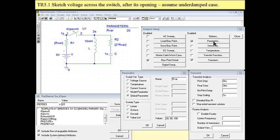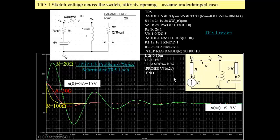We perform parametric analysis and we have a probe window with three traces for three values of R. As we can see, for all three values of R, we have underdamped response.